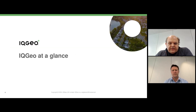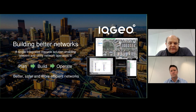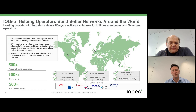The run-through will take about 45 minutes, and we hope to have 15 minutes at the end for questions. So first and foremost, we're a software company. We operate in two verticals — telecoms and utilities — and we're all about helping network operators in those verticals build better networks. Our unique selling proposition is that we provide an integrated software solution to help network operators plan, build and manage their networks in a single integrated solution.